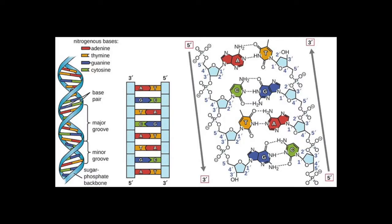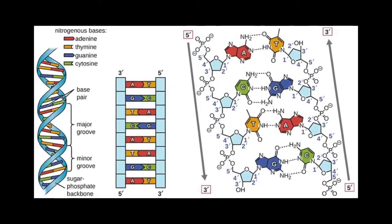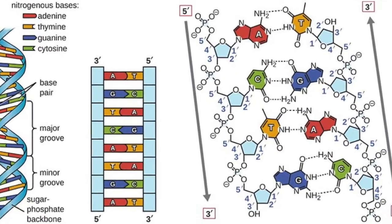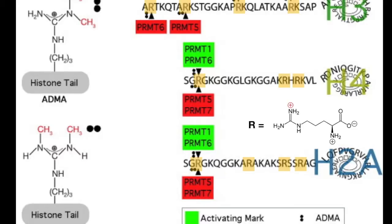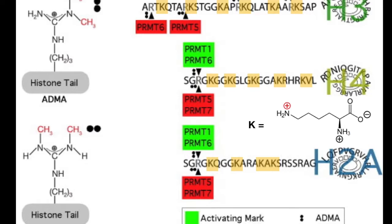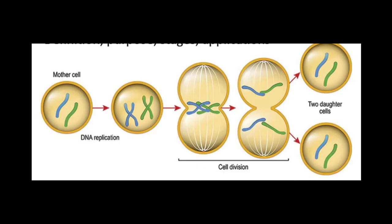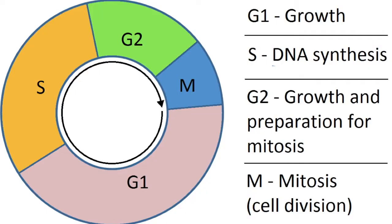The phosphate groups in the DNA backbone give it a negative charge. Amino acids arginine and lysine give histones a positive charge. It is during mitosis that DNA condenses into chromosomes. Histone and DNA synthesis happens during the S phase of the cell cycle.